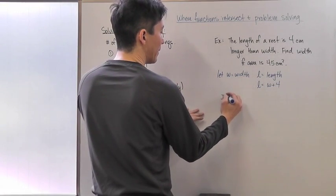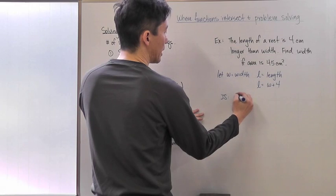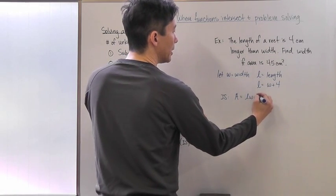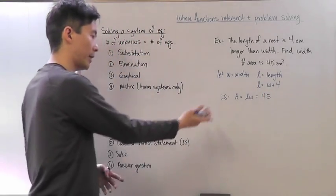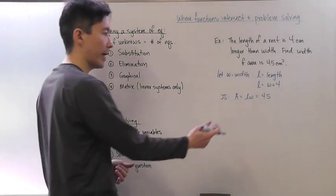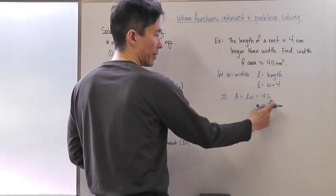Here's the initial statement: the area of a rectangle, which is w times l, equals 45. Using this initial statement, I can solve because I now have two equations with two unknowns.